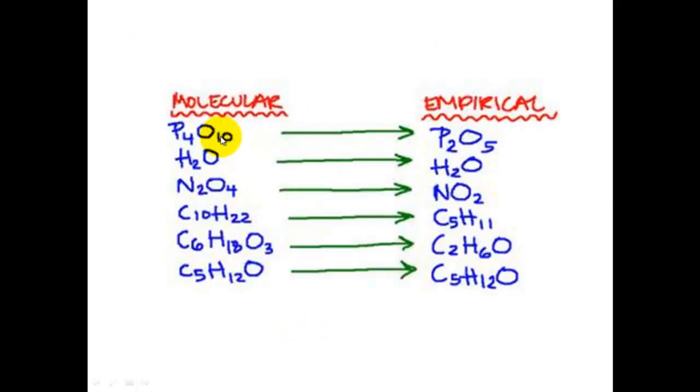Here's a couple of examples. You can see, for example, with water, the empirical formula is the same as its molecular formula because it is its simplest whole number ratio. But most of these other ones, all of these other ones in fact, except for this last one here, the molecular formula is different to the empirical formula. The empirical formula is the simplest whole number ratio of the molecular formula, so you're just dividing by a number to get the simplest whole number ratio.